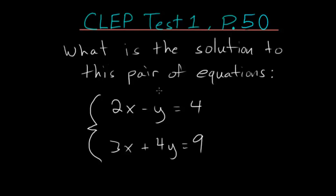What is the solution to this pair of equations? 2x minus y is 4 and 3x plus 4y is 9.